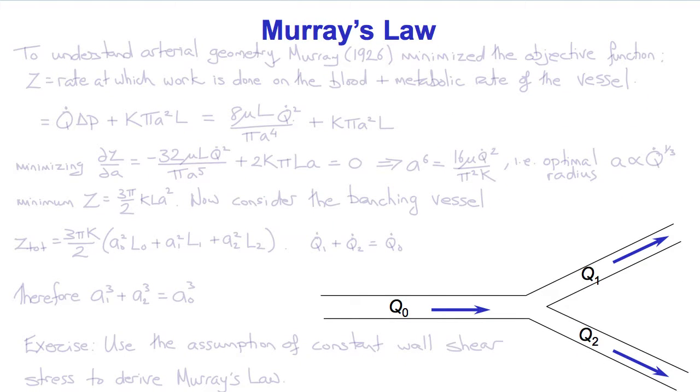So Hagen-Poiseuille flow has been used to study determinants of the geometry and branching patterns of the arterial tree. And famously, Murray in 1926 performed an analysis of arterial geometry in which he minimized the objective function Z, where he defines Z to equal the rate at which work is done on the blood plus the metabolic rate of the vessel.